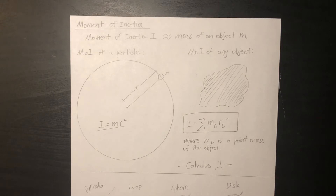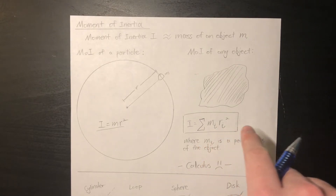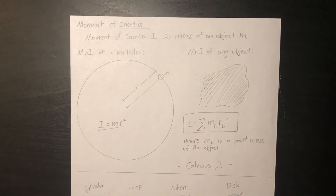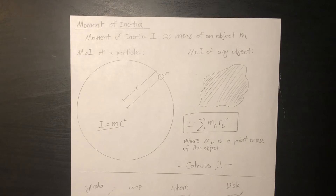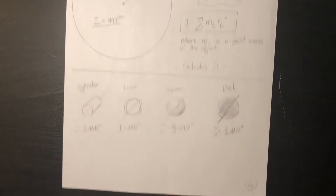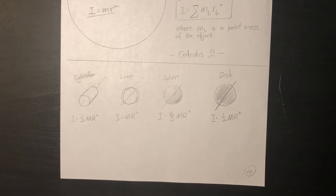For a physical object instead of a particle, the formula for the moment of inertia is I equals the sum of mr squared — we take every particle's moment of inertia and combine it. Most of the time we need calculus to solve this, however some well-known geometric objects have simple formulas. For example, for a loop: mr squared; for a disk: one-half mr squared; and for a sphere: two-fifths mr squared.